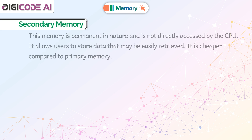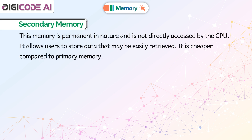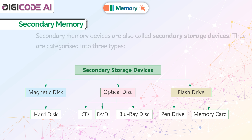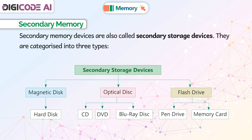Secondary memory is permanent in nature and is not directly accessed by the CPU. It allows users to store data that may be easily retrieved. It is cheaper compared to primary memory. Secondary memory devices are also called secondary storage devices.